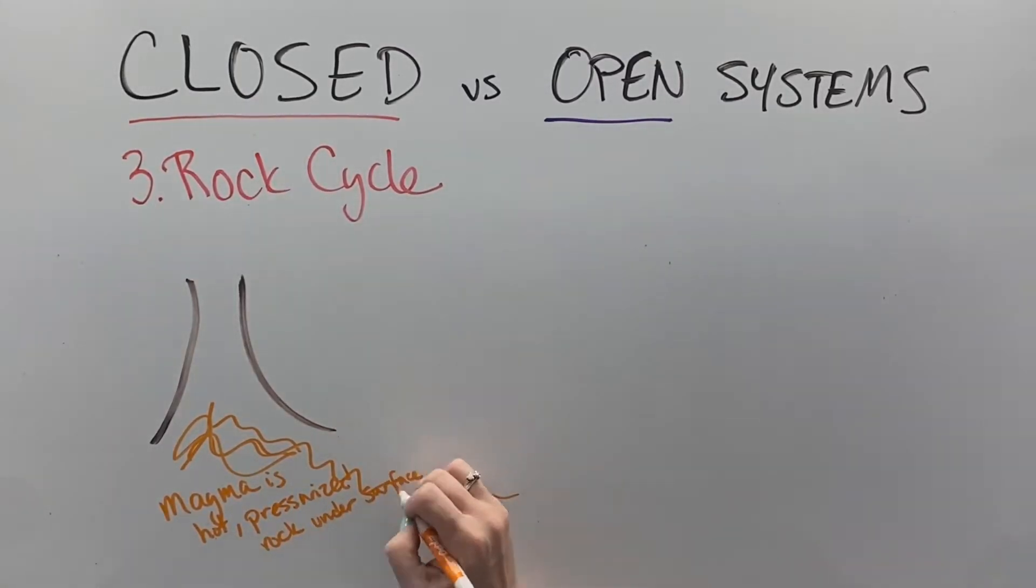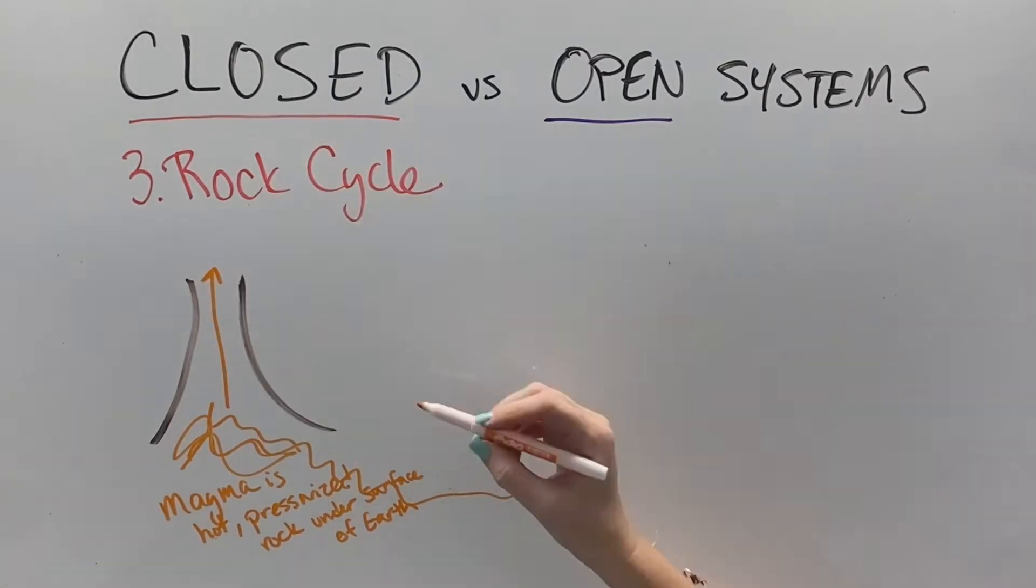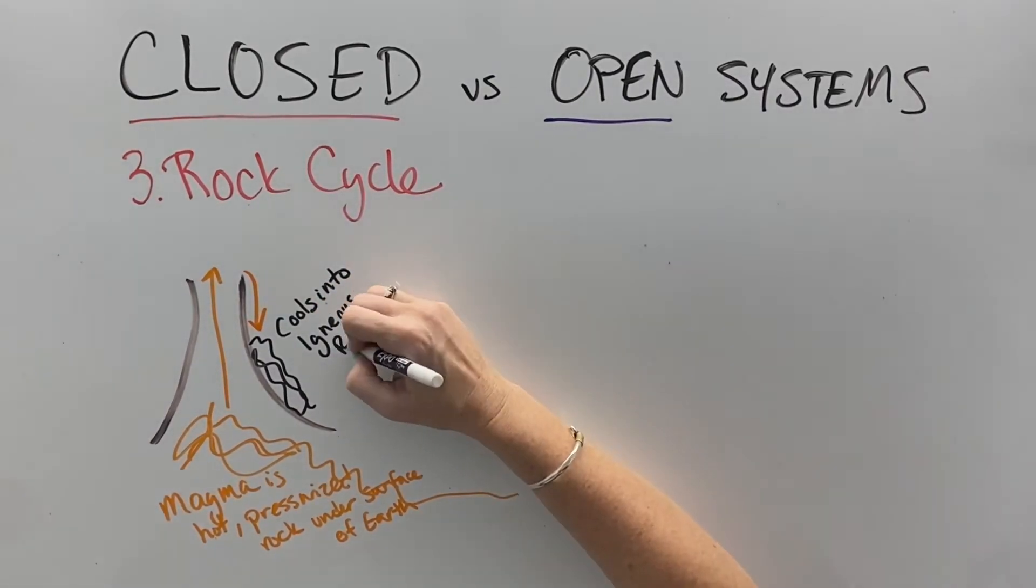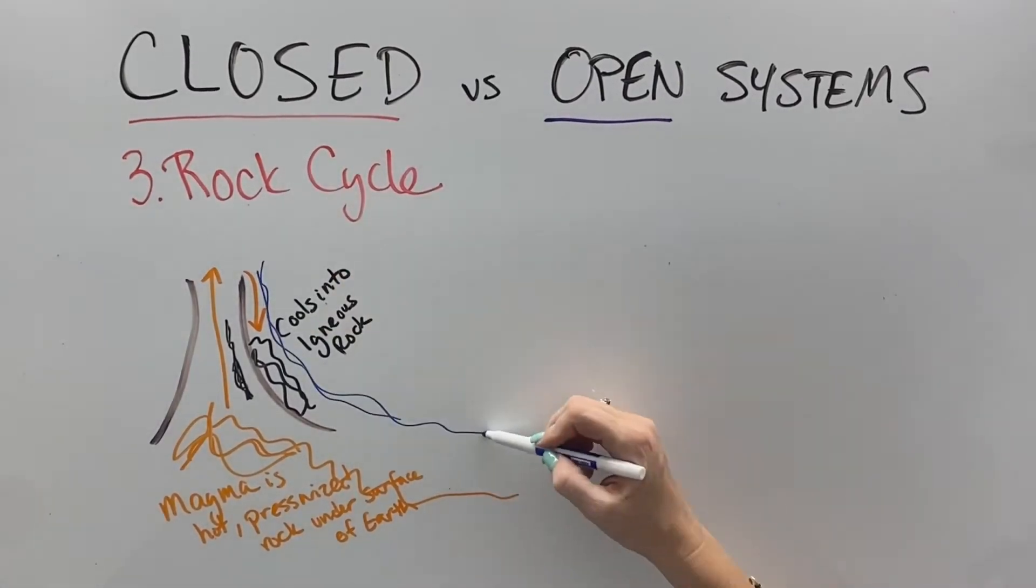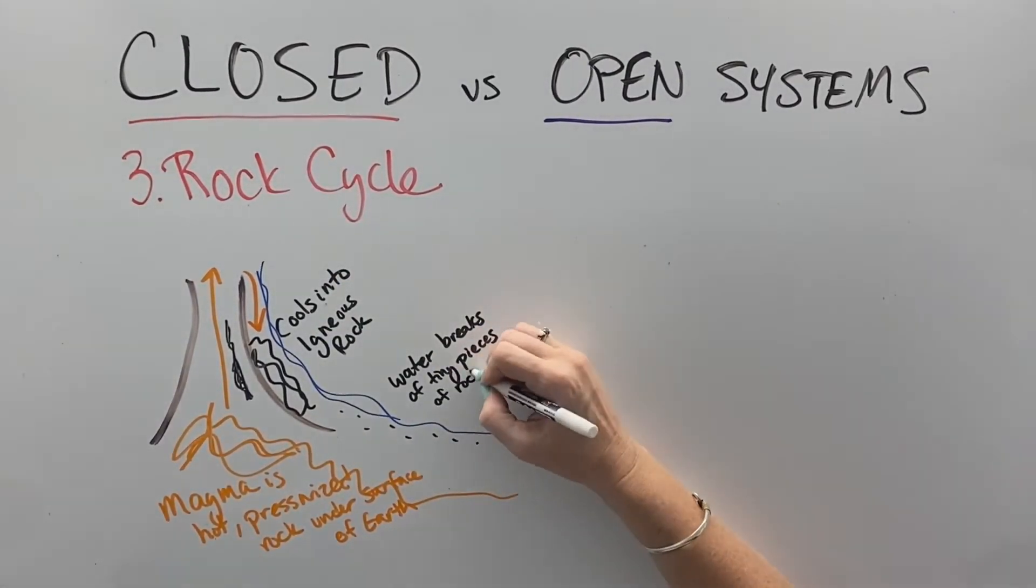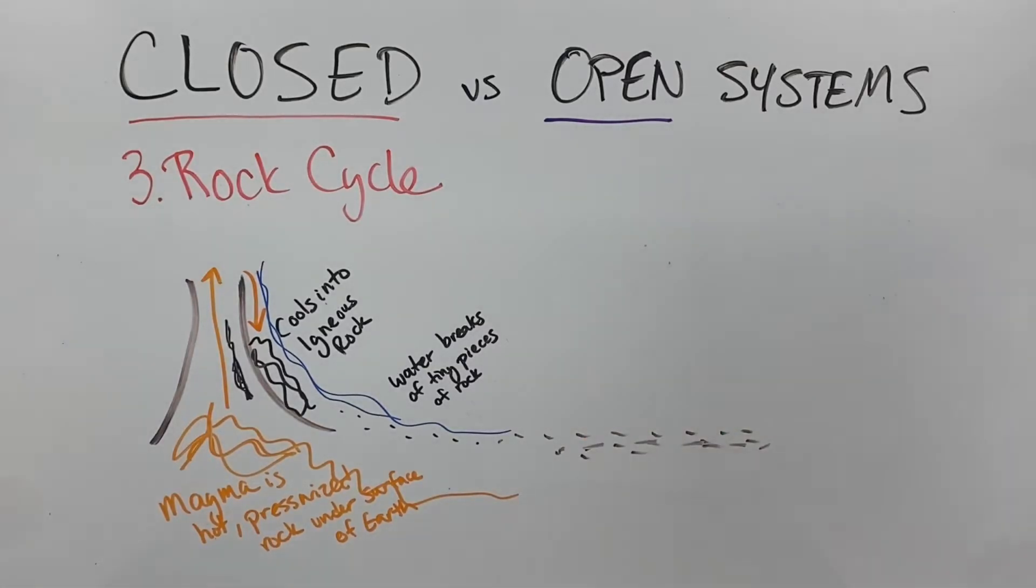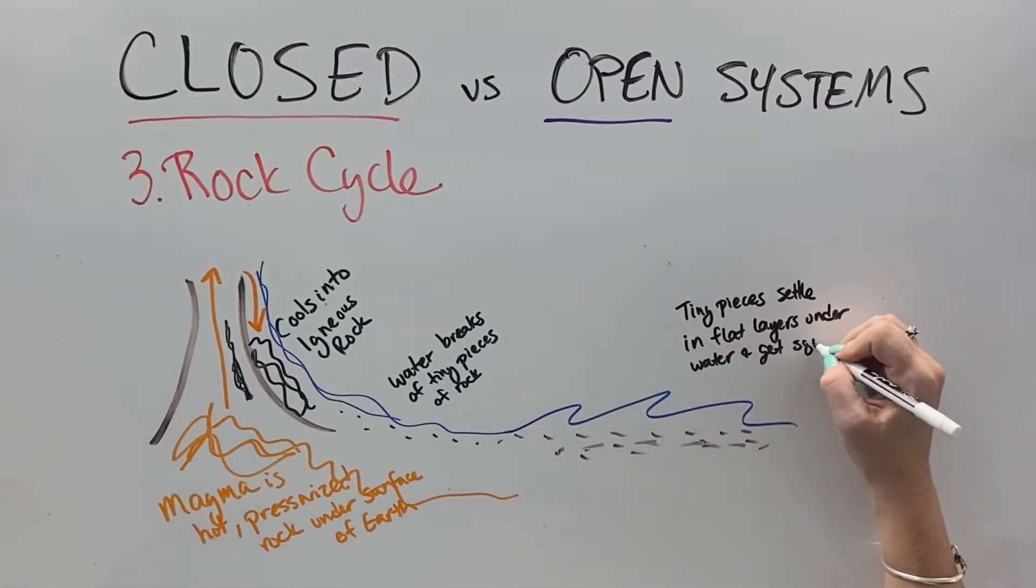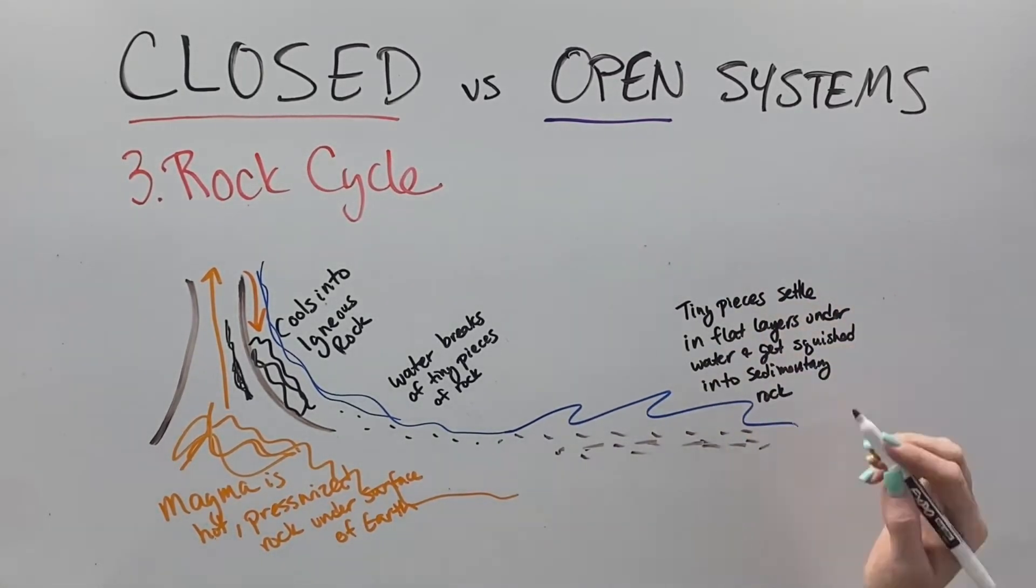The rock cycle is also a closed system where we get magma from inside the planet and it comes out in mountains and cools into igneous rock. Then that igneous rock could be intrusive or extrusive, inside or outside of the planet, and gets broken down by water into tiny pieces of rock called sediments. Those sediments wash down underneath rivers or oceans and settle into flat layers and get squished and eventually into sedimentary rock.